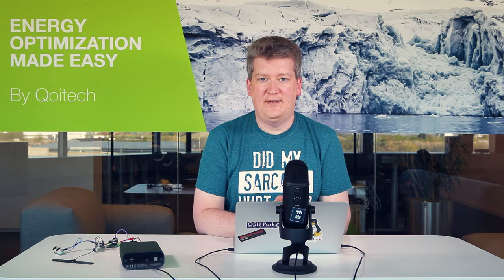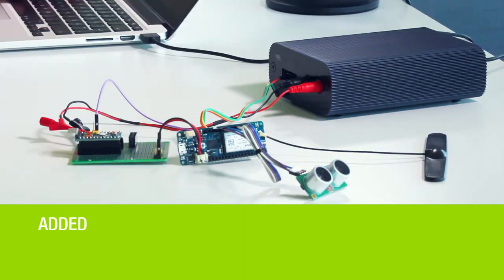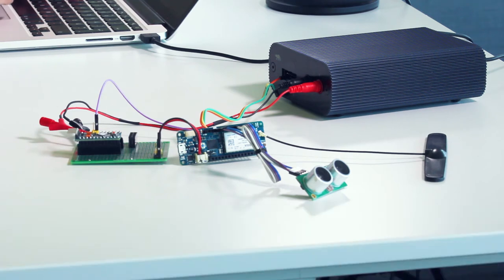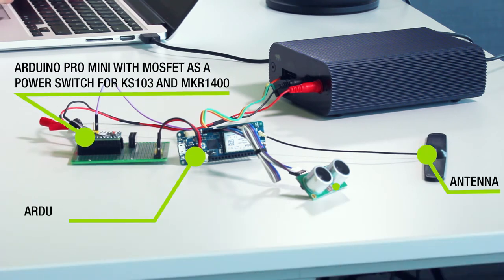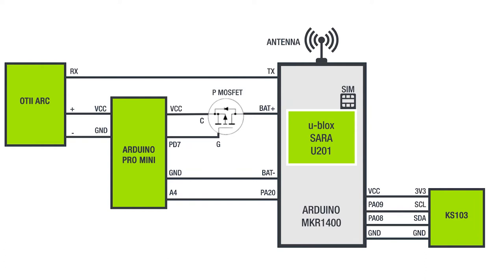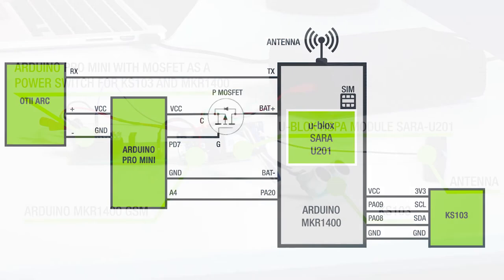Our solution is to simply use an Arduino Pro Mini with a MOSFET that controls the power to the entire MKR1400 and the KS-103 ultrasonic module. Pin 7 drives the gate of a P-channel MOSFET to turn on power. When the measurement is done and the text message has been sent, the MKR1400 raises a pin connected to A4 to request a power down, and the Pro Mini will turn off power for a predetermined amount of time.